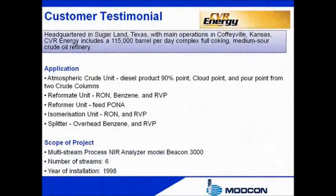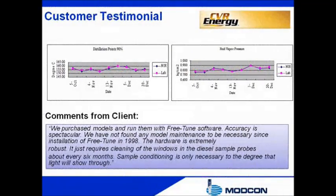In 1998, a multi-stream Beacon 3000 Process Analyzer was installed at the refinery of CVR Energies in Coffeyville, which also processes another large refinery in Kansas. The Beacon NIR Process Analyzer controls a number of physical properties in different kinds of process streams and production units — some based on chemical processes, some on physical processes. Incorporation of the FreeTune software is definitely the keystone responsible for the almost negligible difference between laboratory and NIR analytical results, to the satisfaction of the customer.